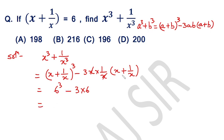6 cube means 6 into 6 into 6, which is 216. Then 216 minus 18, and this gives 198.